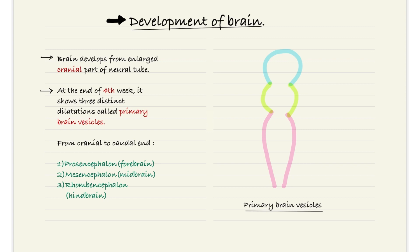The last part of our discussion is the development of the brain. The brain develops from the enlarged cranial part of the neural tube, while the spinal cord develops from the caudal part. At the end of the fourth week, it shows three distinct dilations called the primary brain vesicles. From cranial to caudal, they are the prosencephalon, the mesencephalon, and the rhombencephalon — the forebrain, midbrain, and hindbrain respectively.